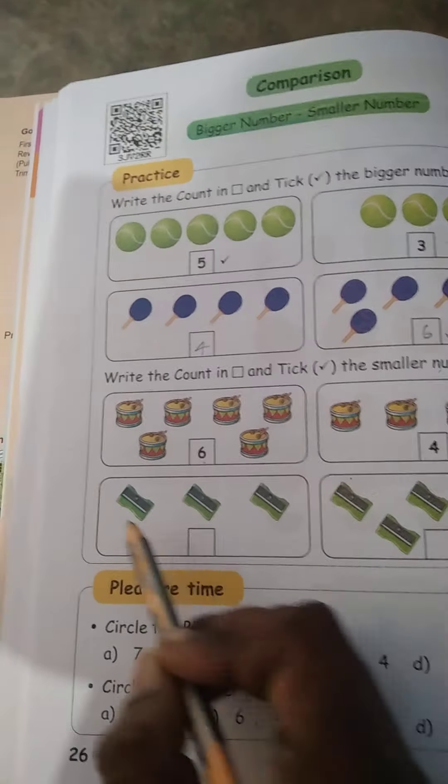Circle the bigger number. 7 or 8, which is big? 8 is big. Round circle the 8. Next, 5 and 6, which is bigger? Yes, 6 is bigger. Circle the 6. Next, 9, 4. Compare which is bigger.